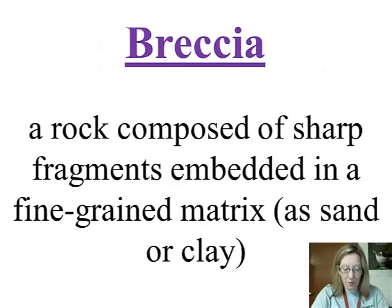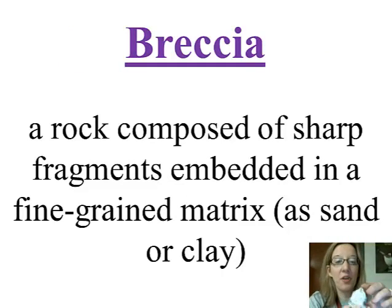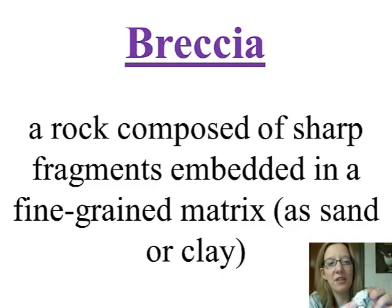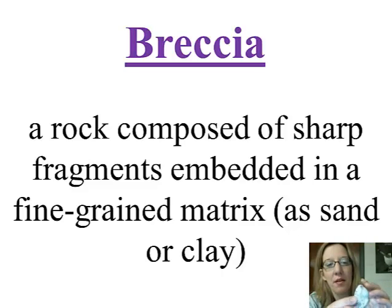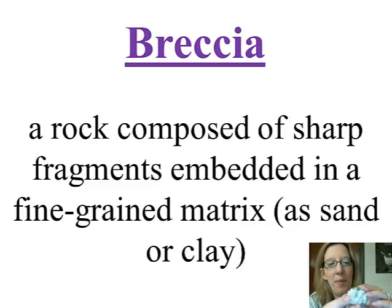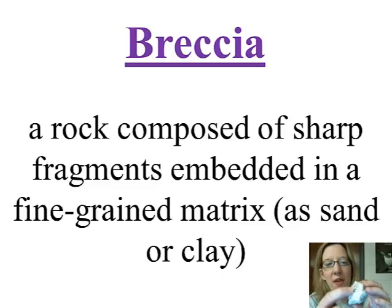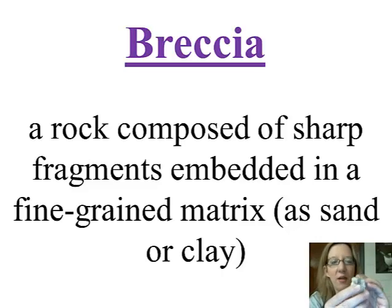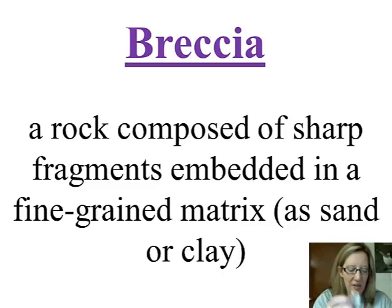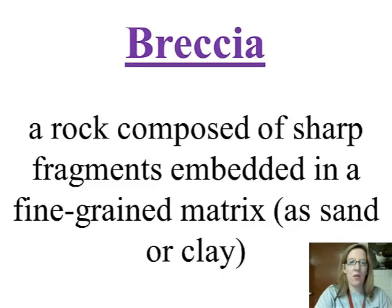Another example of clastic rock is called breccia. It's also made up of little bits of rock, but the difference is these particles are more jagged instead of the more rounded pebbles that conglomerate is made of. Both conglomerate and breccia are clastic rocks — made up of other rock.